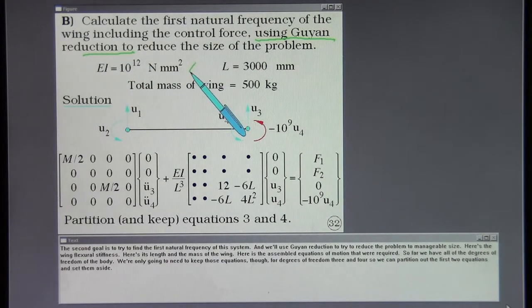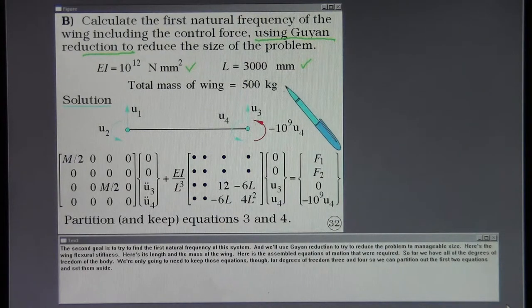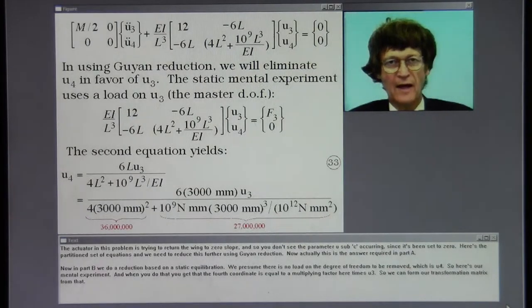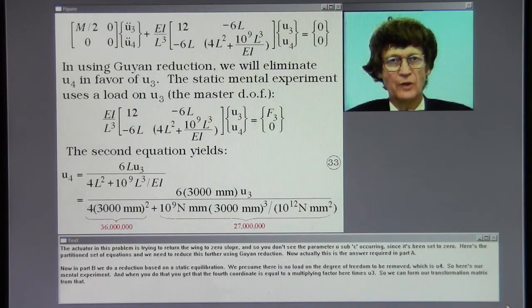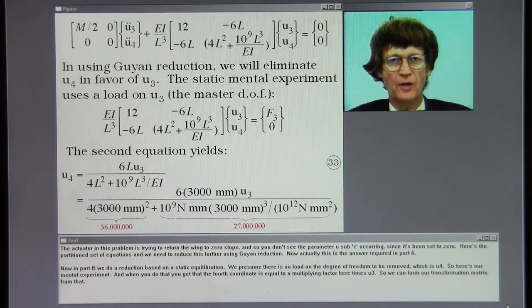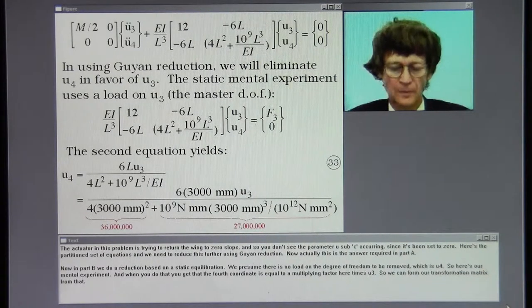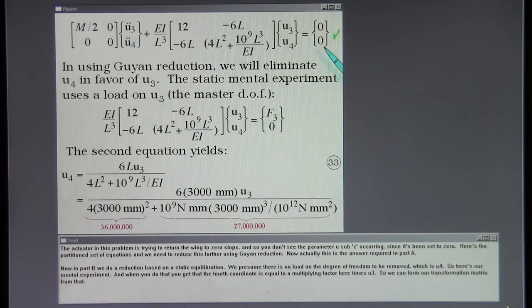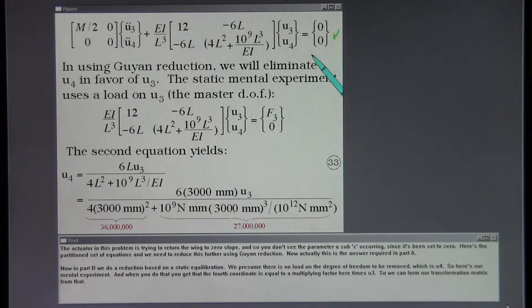Here's the wing flexural stiffness, its length and the mass of the wing. Here is the assembled equations of motion that were required. So far we have all of the degrees of freedom of the body. We're only going to need to keep those equations though for degrees of freedom three and four. So we can partition out the first two equations and set them aside. The actuator in this problem is trying to return the wing to zero slope, and so you don't see the parameter u sub c occurring since it's been set to zero. Here's the partitioned set of equations.